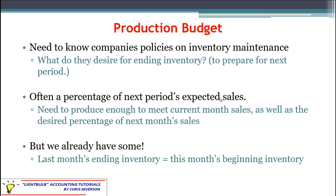A lot of times the desired ending inventory is a percentage of next period's expected sales — that's the simple way of doing it. But read the textbook question closely because they could give you other alternatives, such as a specific number of units left over. We want to make sure, at the very least, that we produce enough to meet the current month's sales, but we also want a little extra inventory based on next month's needs. The key thing to remember is that we already have some units at the beginning of the month, because last month had ending inventory. Whatever number we have from last month carries forward as this month's beginning inventory. Those are the things we need to know in order to develop our production budget.